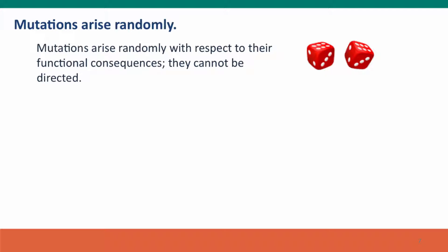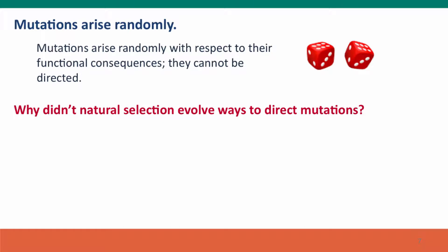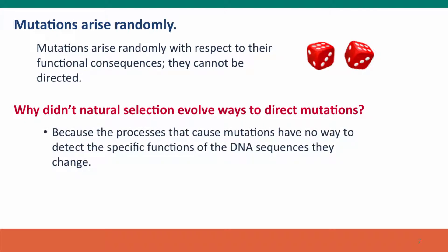Mutations can't be directed — the cell has no way to do this. Why didn't natural selection evolve ways to direct mutations? It would certainly be beneficial to prevent bad mutations and promote good ones. Well, there are two reasons. First, the processes that cause mutations have no way to know the functions of the DNA sequences that they change. DNA polymerase replicates DNA; it knows nothing about the functions of the sequences it replicates — introns, exons, junk DNA, genetic parasites — DNA polymerase can't tell them apart. It replicates them all, treats them all equally, and has no way it could ever tell them apart.